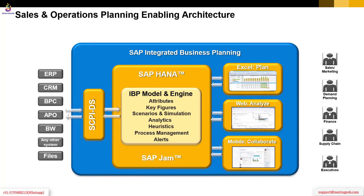If someone has a question about what we mean by 'attribute' — if we relate to an ECC system and take the example of material master, material master is one master data entity, and within material master there are different fields. MRP type is one field that becomes an attribute from an IBP perspective, so you can relate the terminologies. Within this dedicated planning area you can model your IBP system, add your own attributes and key figures, and also enable simulation using different scenarios.